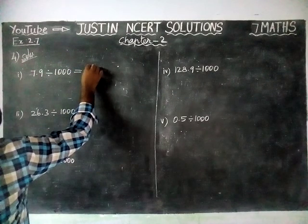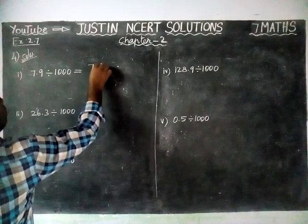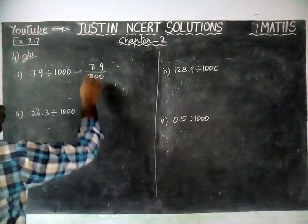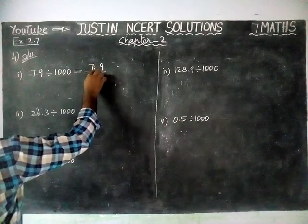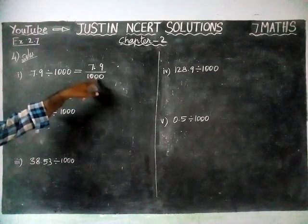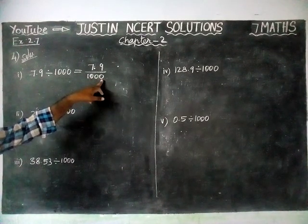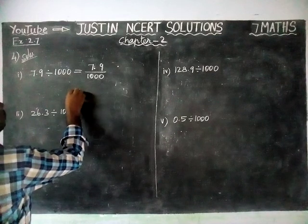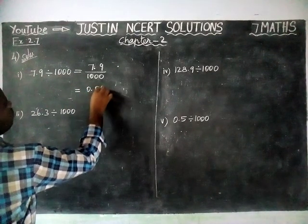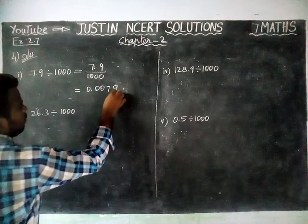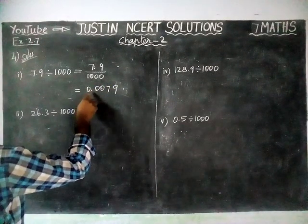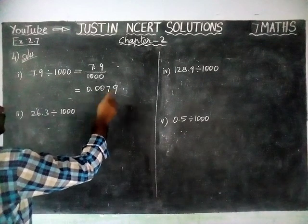The first question is 7.9 divided by 1000. We have 1 decimal point already, and in the denominator we have 3 zeros. So we need to move 3 steps to the left-hand side, which means we need 2 more steps. The answer is 0.0079.